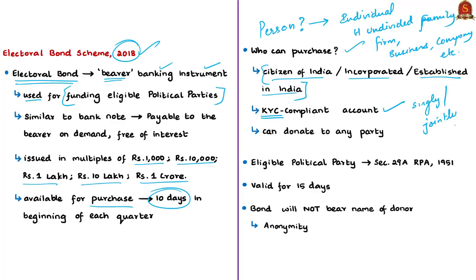Donors can donate these bonds to the party of their own choice, and the party can cash this bond through its own verified account within 15 days. An eligible political party is one registered under Section 29A of the Representation of the People Act of 1951, and it must have secured not less than 1% of the votes polled in the last general election to the House of the People or the Legislative Assembly. Electoral bonds can be redeemed only by an eligible political party by depositing the same bond in their designated bank account maintained with the authorized bank. Keep this point in mind — today's news article is based on this.